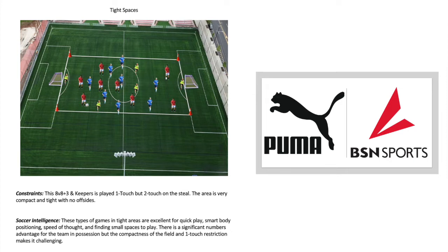The idea here is a really compact space — 8v8 plus 3, with keepers. Maybe it's two-touch on the steal and then everything else is one-touch. Nice and narrow, big numbers, extra plus players. This makes players able to operate very quickly in small spaces. You can experiment with whether you play offsides or not — not having offsides is something else entirely. It's another constraint about learning how to play in tight areas, one-touch and two-touch on the steal.